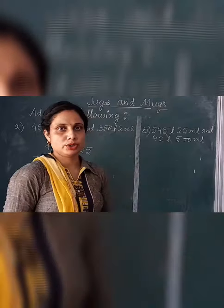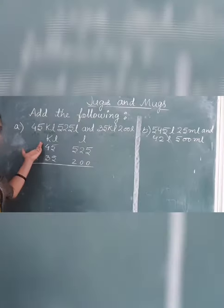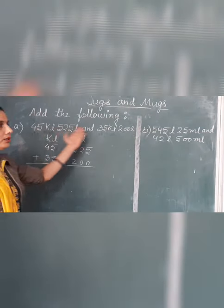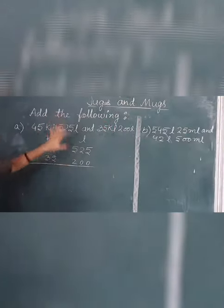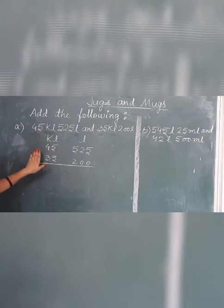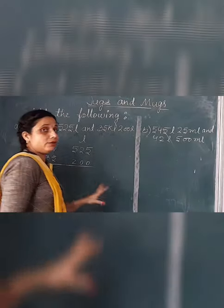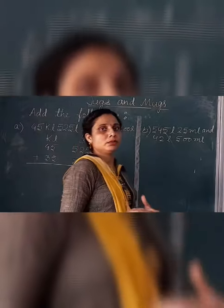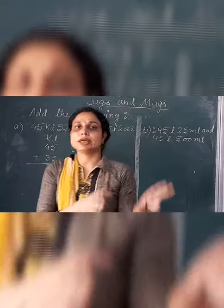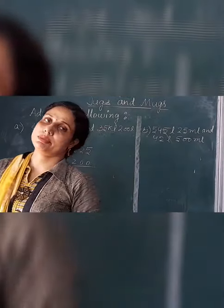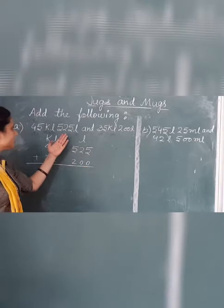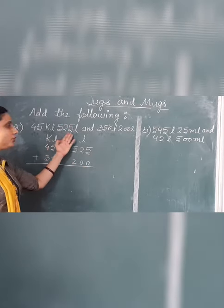Which one is the greater unit — we write the greater unit first. After that we write the number. When we write the number, we remember the place value of that particular number. For example, suppose we write the number 525.